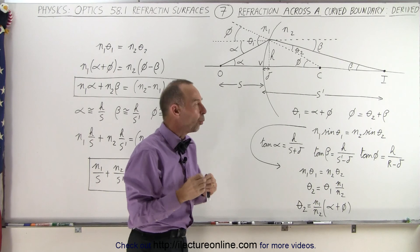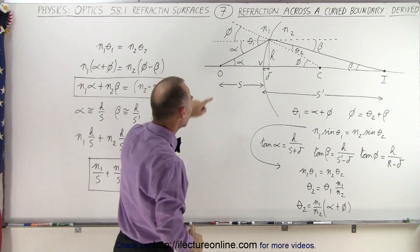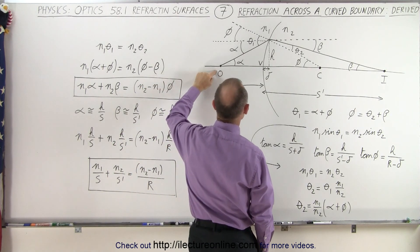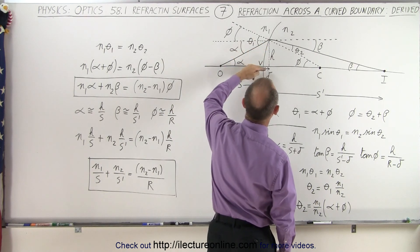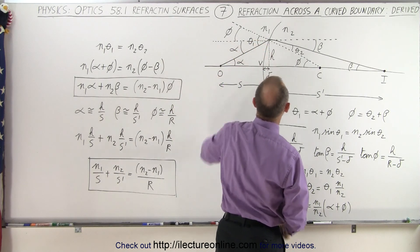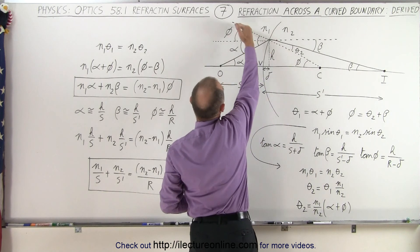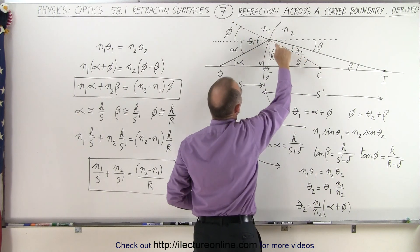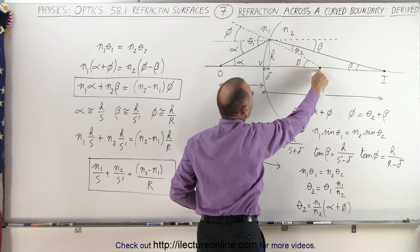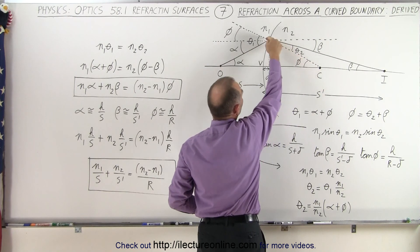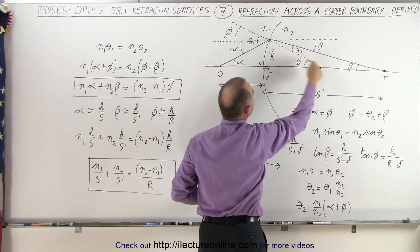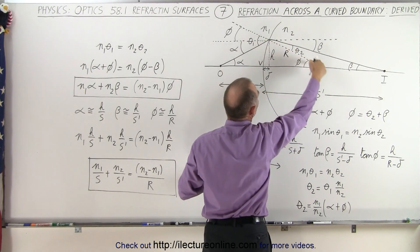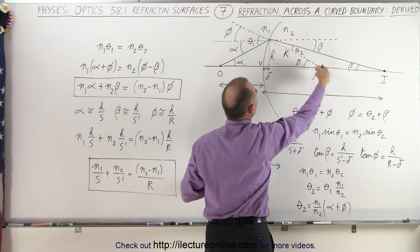Let's take it one step at a time. We draw a ray from the object to the boundary a slight distance h above the optical axis. Notice the line perpendicular to the boundary going to the center of curvature — that distance is the radius r.